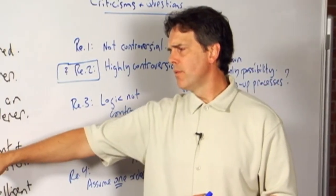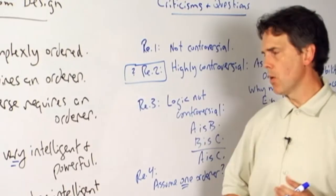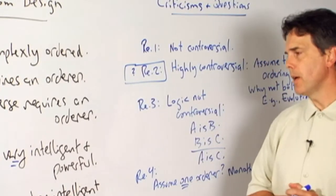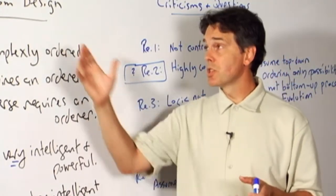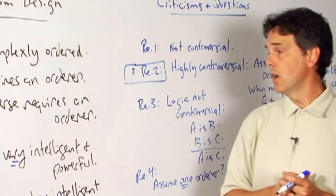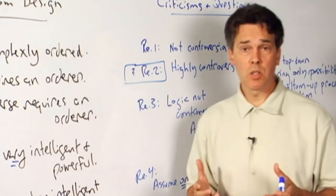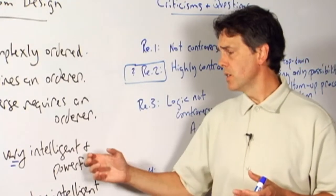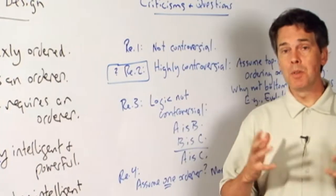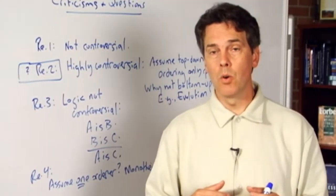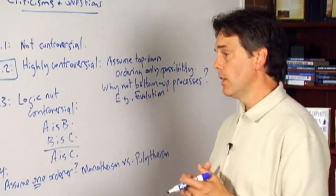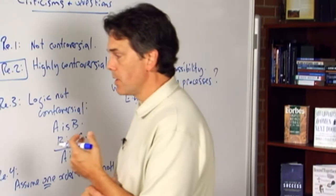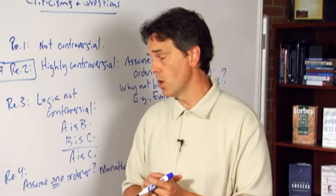But how very intelligent and how very powerful must this god be? And we certainly know that on some versions of the argument from design, some people want to reach the conclusion that the intelligent and powerful designer must be omnipotent or omniscient, that is to say infinitely so.